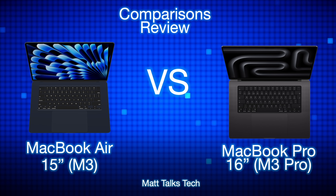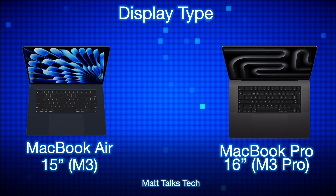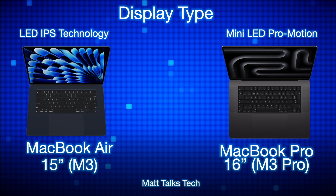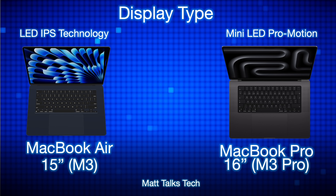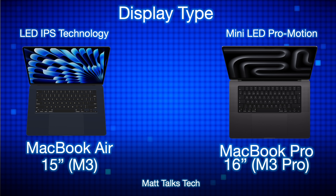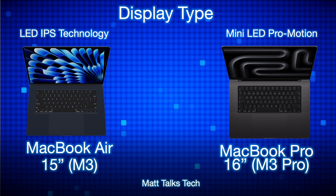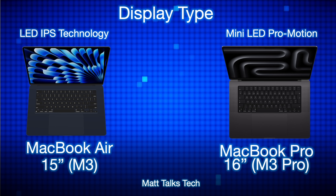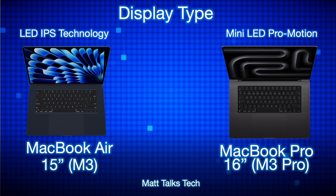Starting with the display type: the MacBook Air 15-inch uses LED IPS technology — the same Retina display technology we've had in MacBooks since around 2012. The MacBook Pro 16-inch, on the other hand, has a newer mini-LED ProMotion display, which is clearer, sharper, and brighter.